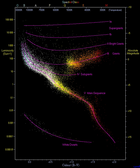The majority of stars on a typical HR diagram lie along the main sequence curve. This line is pronounced because both the spectral type and the luminosity depend only on a star's mass, at least to zeroth-order approximation, as long as it is fusing hydrogen at its core—and that is what almost all stars spend most of their active lives doing. The temperature of a star determines its spectral type via its effect on the physical properties of plasma in its photosphere.